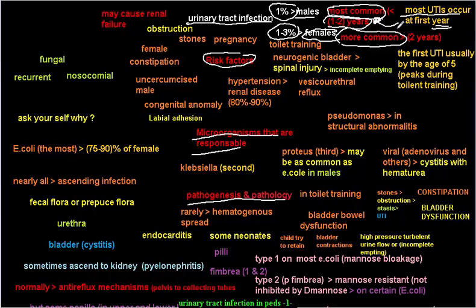Most UTIs in males occur in the first year of life. In females, the peak of UTI happens at the fifth year of life, during the toilet training period. So in males the peak is at one to two years, while in females it is at the fifth year.